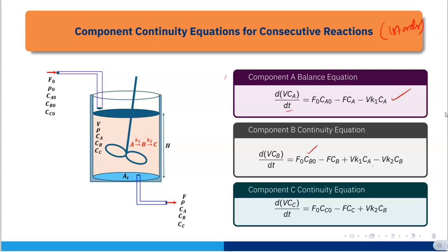So performing the component mass balance for all three components gives us three mass balance equations. Together these form the complete model — the component continuity equations for CSTR modeling of consecutive first-order reactions: d(VCa)/dt = F0·Ca0 - F·Ca - V·K1·Ca; d(VCb)/dt = F0·Cb0 - F·Cb + V·K1·Ca - V·K2·Cb; d(VCc)/dt = F0·Cc0 - F·Cc + V·K2·Cb. That's it, thank you.